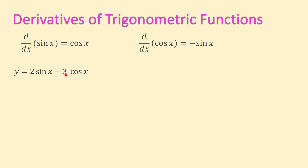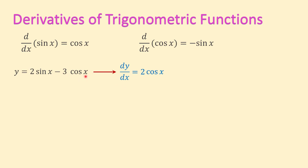The derivative of this function equals two times the derivative of sine. Note that two is the coefficient — we keep the coefficient and take the derivative of the rest of the term. Derivative of sine of x equals cosine of x, so the derivative equals two cosine of x minus three times the derivative of cosine. Derivative of cosine equals negative sine, so negative three times negative sine of x gives positive three sine. We can rewrite this answer as 2 cosine of x plus 3 sine of x.